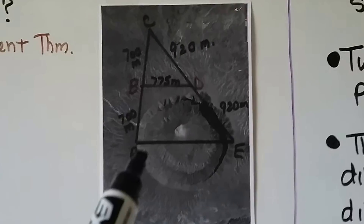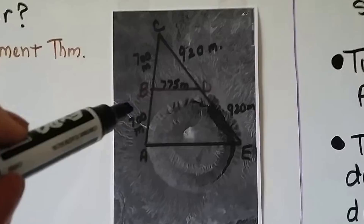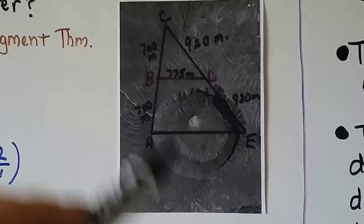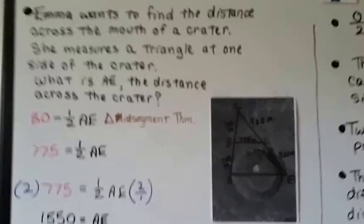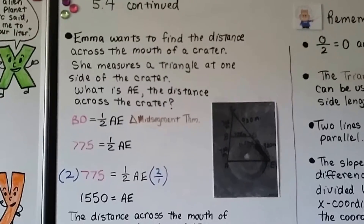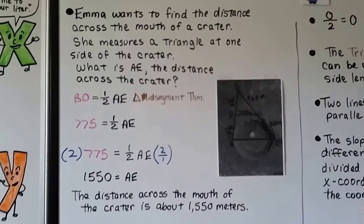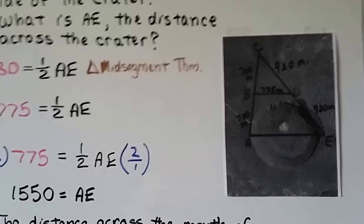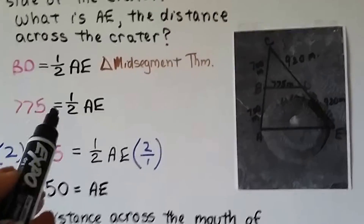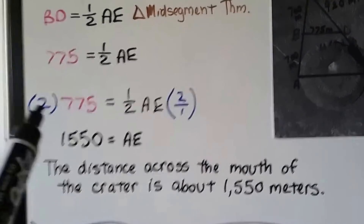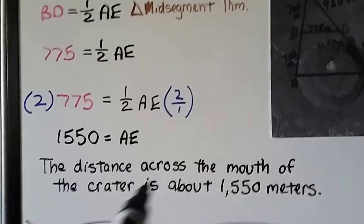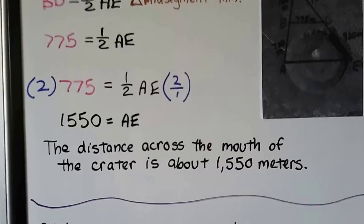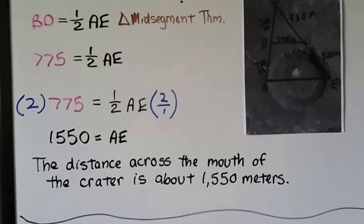This is a crater, and across the mouth of it goes from point A to E. We can see that this side is 700 meters and this side is 700 meters, so BD is a mid-segment — 920 and 920 — and BD is 775 meters. Emma wants to find the distance across the mouth of the crater. BD, our mid-segment, is half of AE by the Triangle Mid-Segment Theorem, so 775 equals one-half times AE. Multiplying both sides by 2, we get AE equals 1,550 meters.